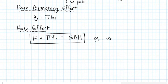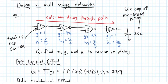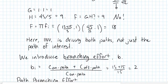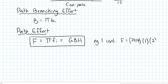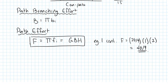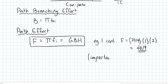Returning to Example 1: F = (20/9) × 1 × 2 = 40/9. The branching effort is 1 because none of the gates in this path drive outputs off the critical path. Importantly, we couldn't compute F the normal way — as the product of little f's — because we don't know the sizes of all the intermediate devices. Yet we could still compute big F.